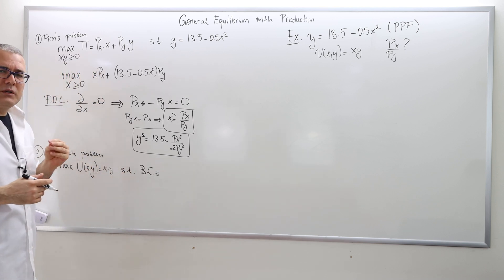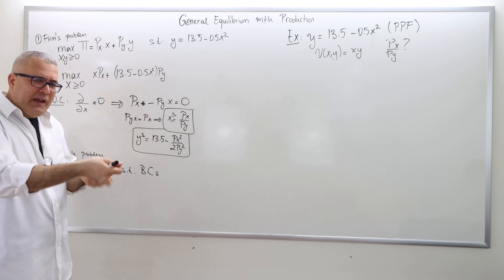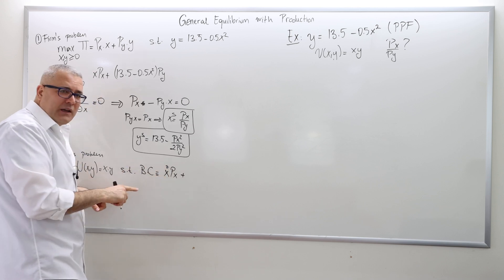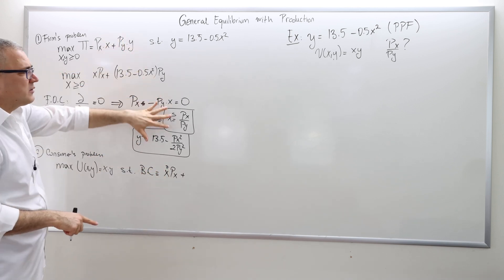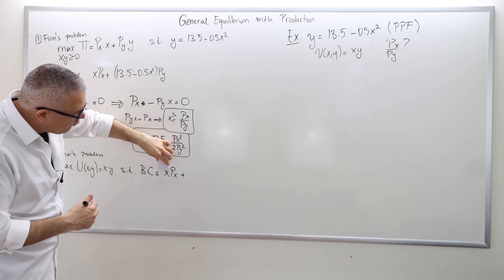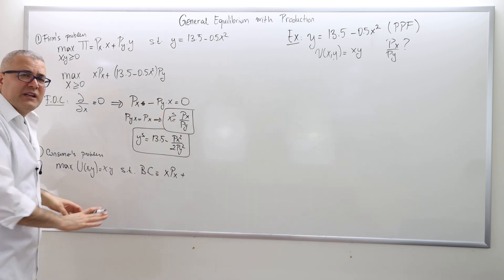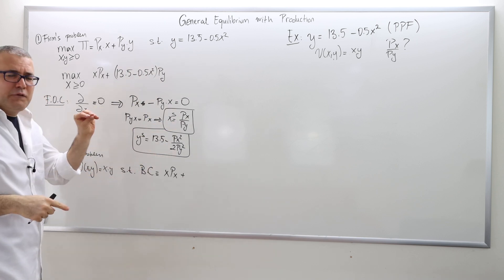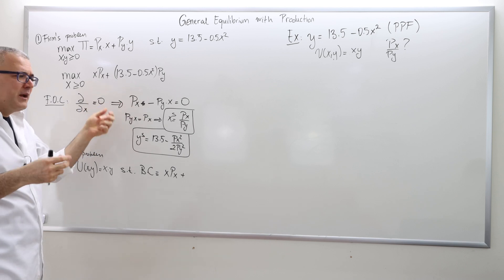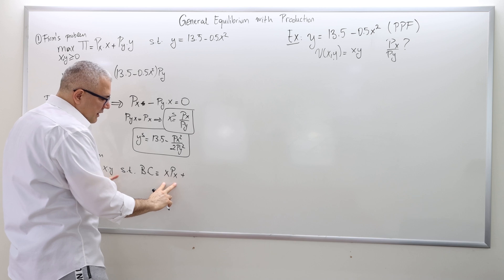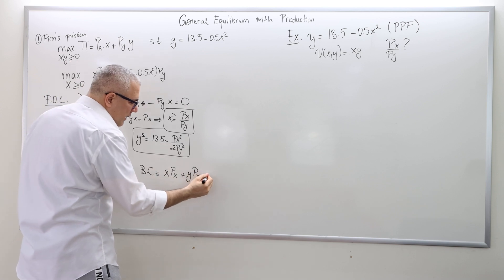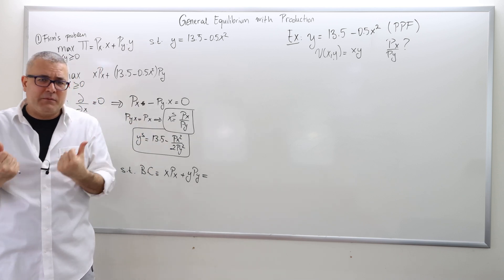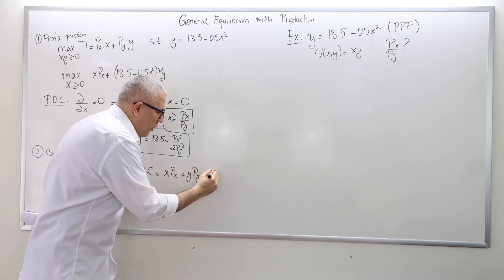The consumer buys consumption goods X and Y, so she pays PX times X_D plus PY times Y_D — this is her expenditure, which has to equal income. She doesn't have initial endowments for good X and good Y to sell. But she has the firm, and the firm makes some profit. So with that profit money, she buys good X and good Y. This is her budget constraint.